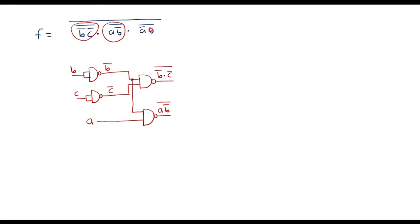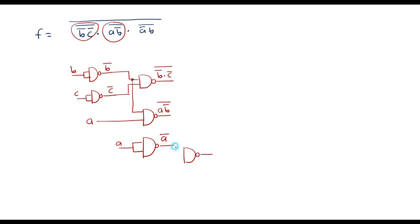Now let me consider (āb)̄. ā is obtained by shorting both inputs of a NAND gate with input a, giving ā. Then I take one more NAND gate with inputs ā and b. The output of this is (ā · b)̄. So now we have implemented this term also.